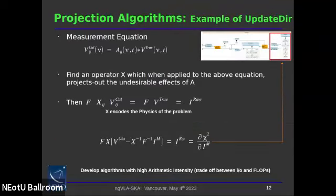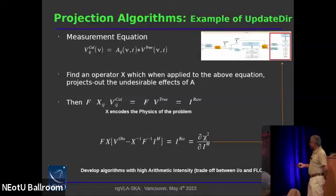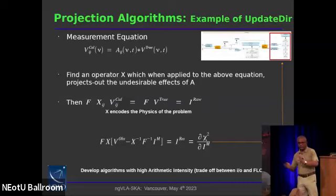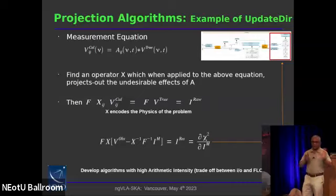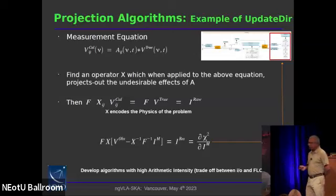I pulled out two examples for specific boxes: algorithms that deliver direction-dependent calibration and imaging, such as W-projection, A-projection, AW-projection, ionosphere correction, pointing error correction, and mosaicing. These operate at very high arithmetic intensity — that is, high number of floating point operations per byte loaded — which is important for efficient hardware utilization.